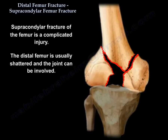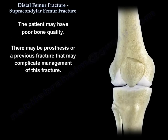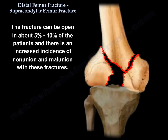The supracondylar fracture of the femur is a complicated injury. The distal femur is usually shattered and the joint can be involved. The patient may have poor bone quality. There may be a prosthesis or a previous fracture that may complicate management. The fracture can be open in about five to ten percent of patients, and there is an increased incidence of nonunion and malunion with these fractures.